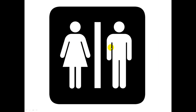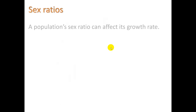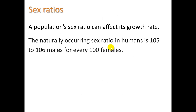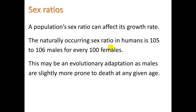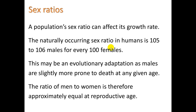Sex ratios — a population's sex ratio can affect its growth rate. The naturally occurring sex ratio in humans is 105 to 106 males for every 100 females. This may be an evolutionary adaptation, as males are slightly more prone to death at any given age. The ratio of men to women is therefore approximately equal at reproductive age, which is what you'd want for the most successful reproduction.